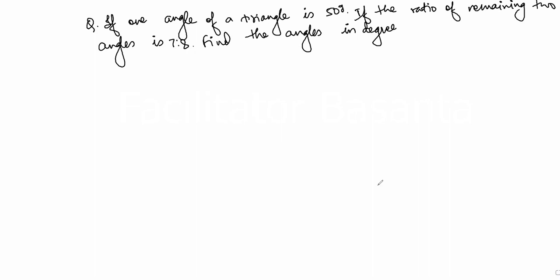The question is, if one angle of a triangle is 50 grade, if the ratio of remaining two angles is 7 to 8, find the angles in degree.